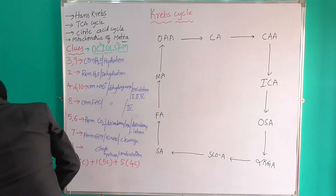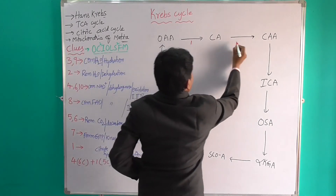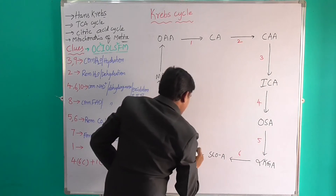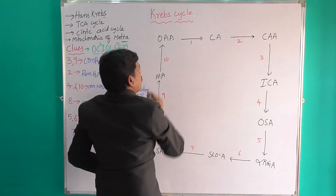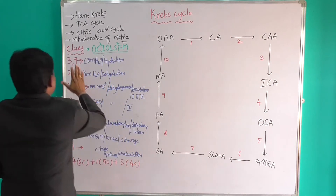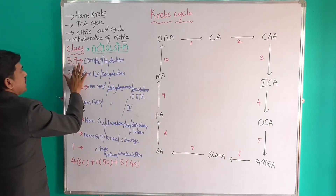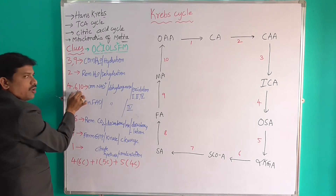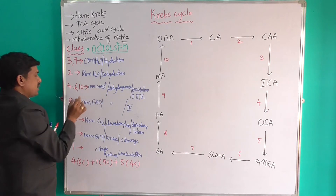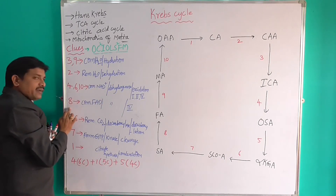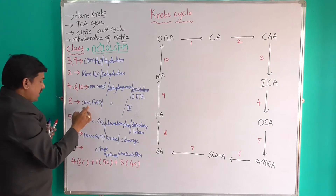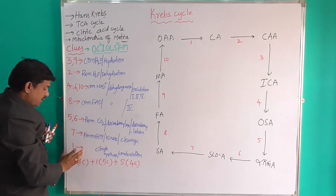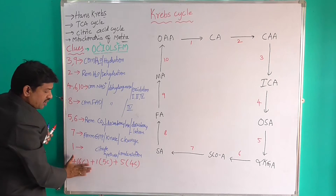There are 10 stages total. Stages 3 and 9 involve combination with water. Stages 2 and 8 involve removal of water — so 4 plus 6 equals 10. Stages 4 and 6 involve NAD reactions. Stages 5 and 6 involve removing carbon dioxide. Stage 7 is the formation of GTP. Stage 1 is the condensation stage.